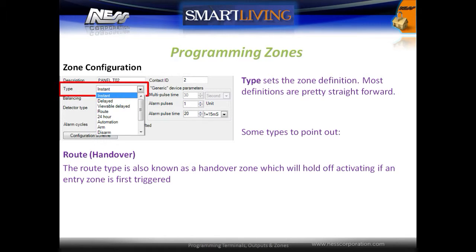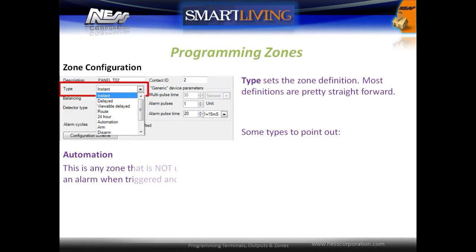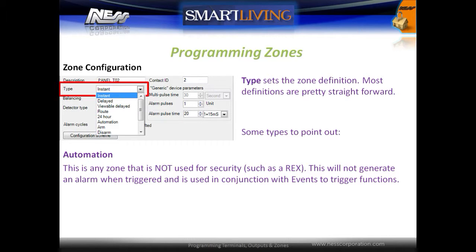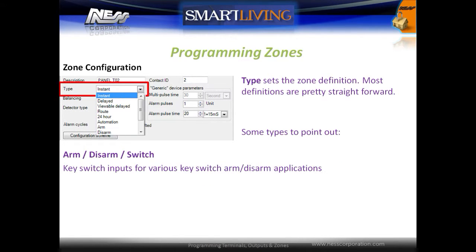The route zone option, also referred to as a handover zone, will hold off activating an alarm if an entry zone is first triggered. The automation zone type is for any zone not being used for security, such as a request-to-exit button — it will not generate an alarm when triggered and is used in conjunction with events to trigger functions. The arm, disarm and switch options are for key switch inputs.